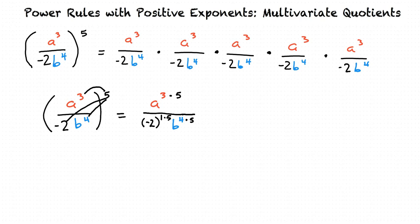From here, we can simplify the exponents of each term. a to the 3 times 5 is a to the 15th. negative 2 to the 1 times 5 is negative 2 to the 5th, and b to the 4 times 5 is b to the 20th. We can then further simplify this by writing negative 2 to the 5th as negative 32.